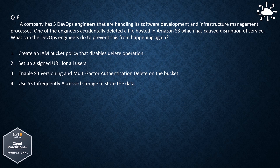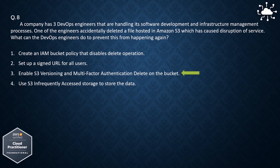Option 1: Create an IAM bucket policy that disables delete operation. Option 2: Set up a signed URL for all users. Option 3: Enable S3 versioning and multi-factor authentication (MFA) delete on the bucket. Option 4: Use S3 infrequently accessed storage to store the data. The correct answer is: enable S3 versioning and multi-factor authentication delete on the bucket.